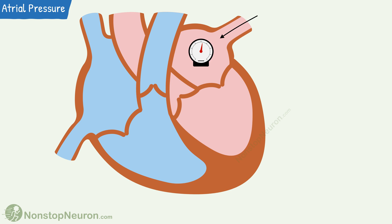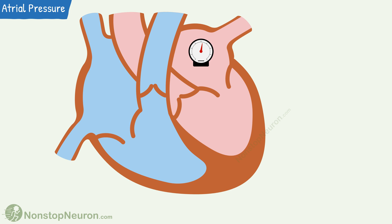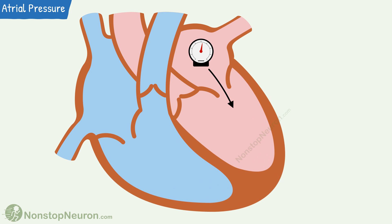Meanwhile, the semilunar valves close and ventricles enter into the phase of isovolumetric relaxation. Then the atrioventricular valves open and blood rushes from the atria into the ventricles. This results in a fall in atrial pressure.